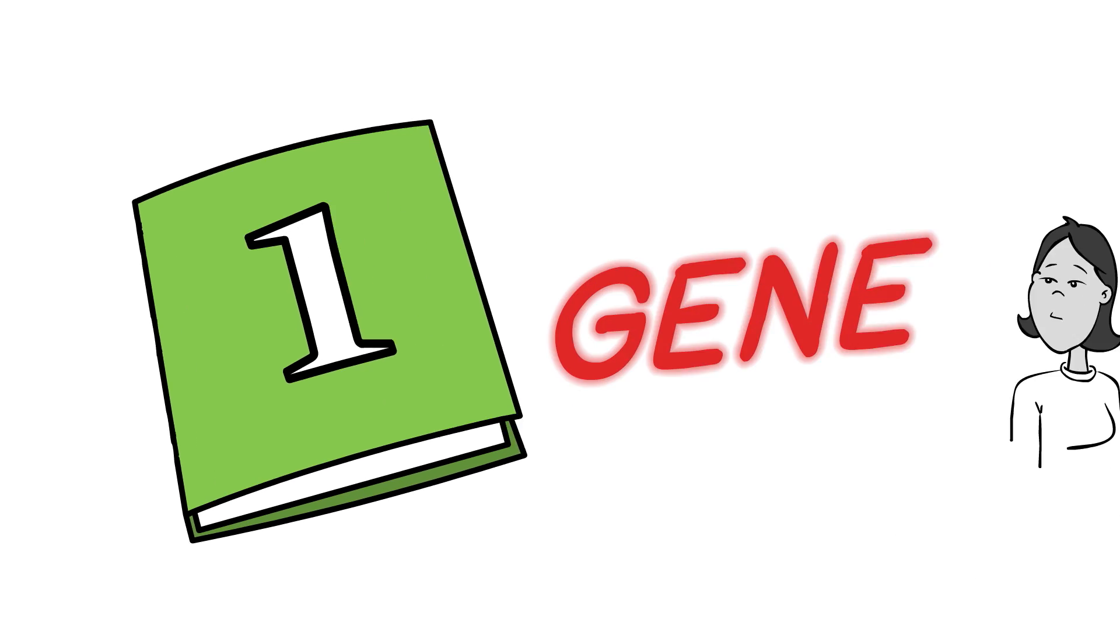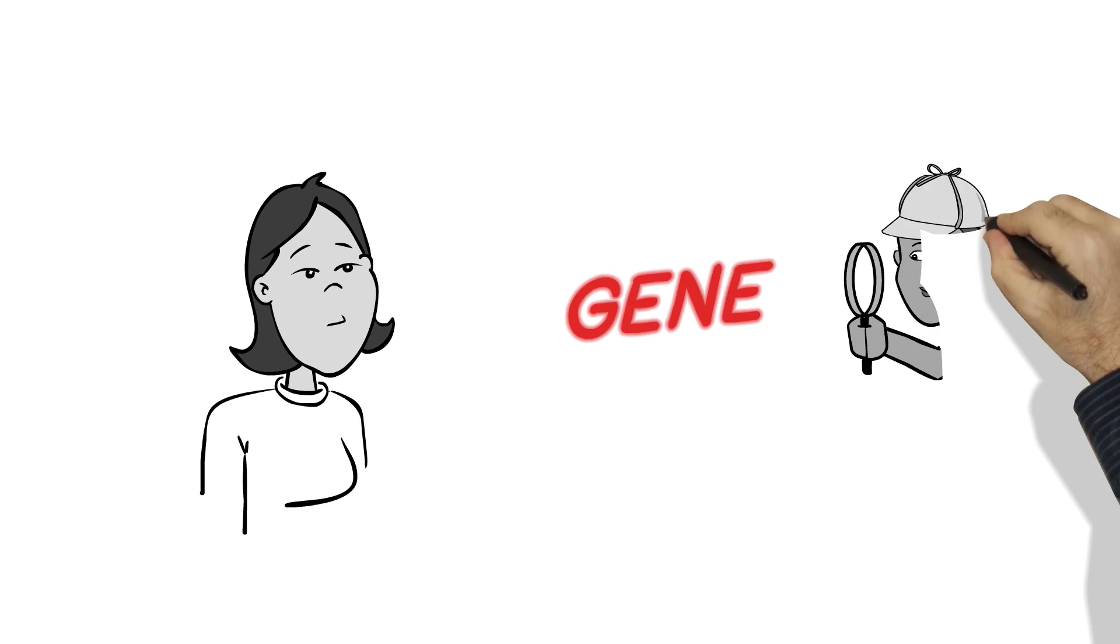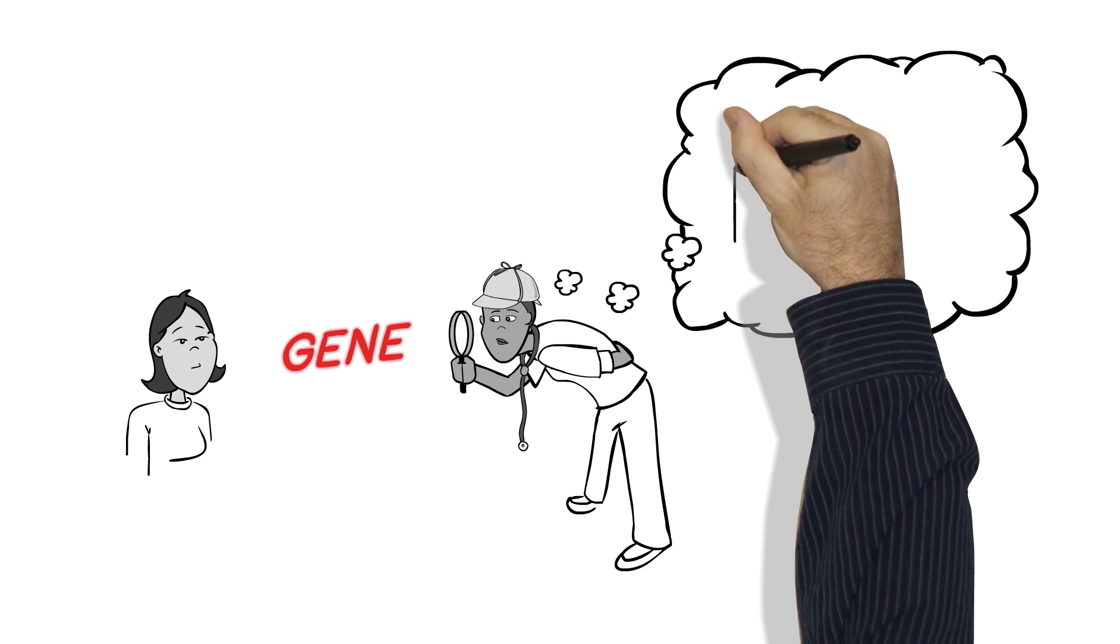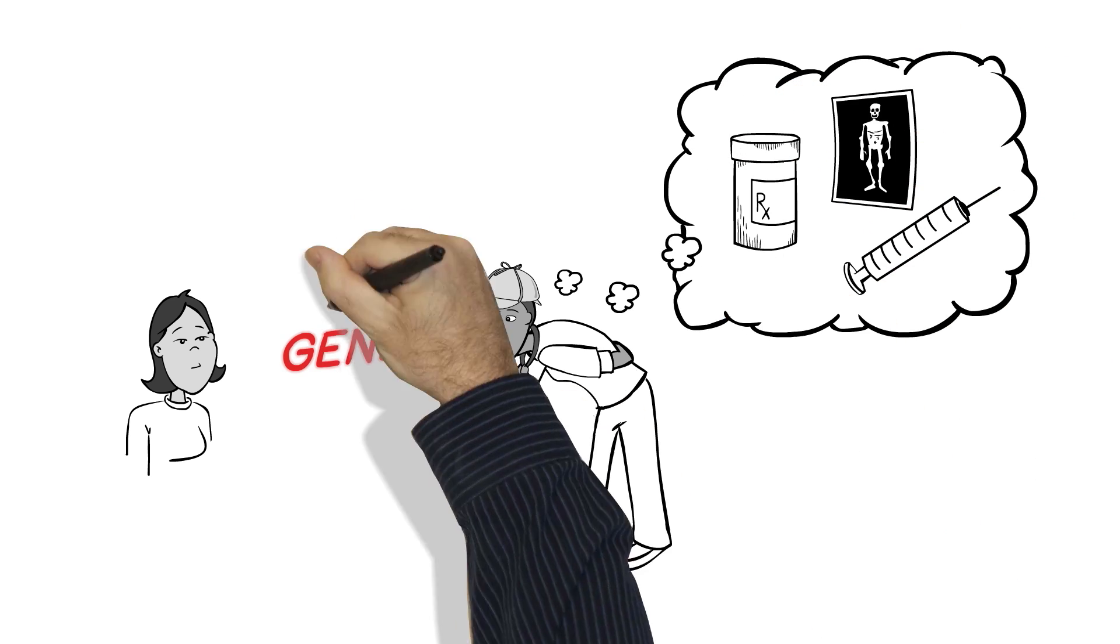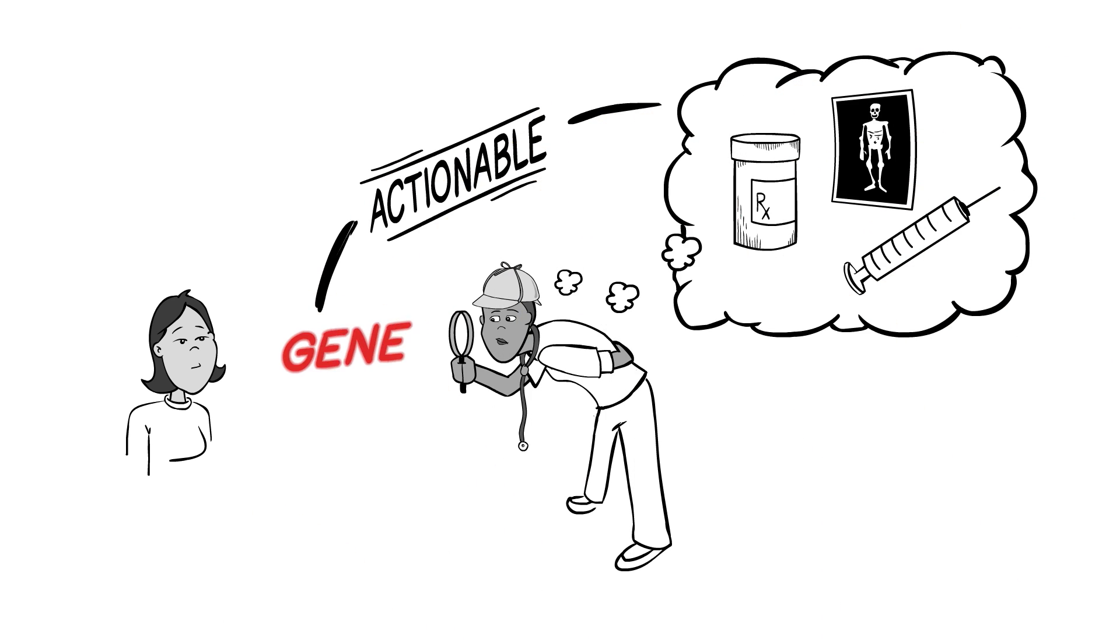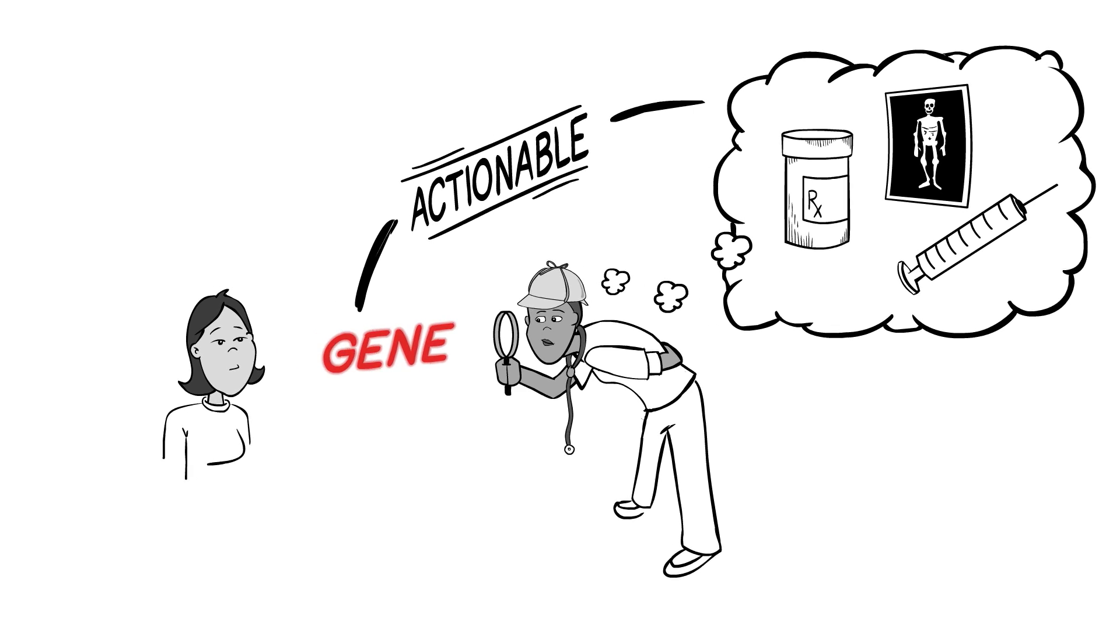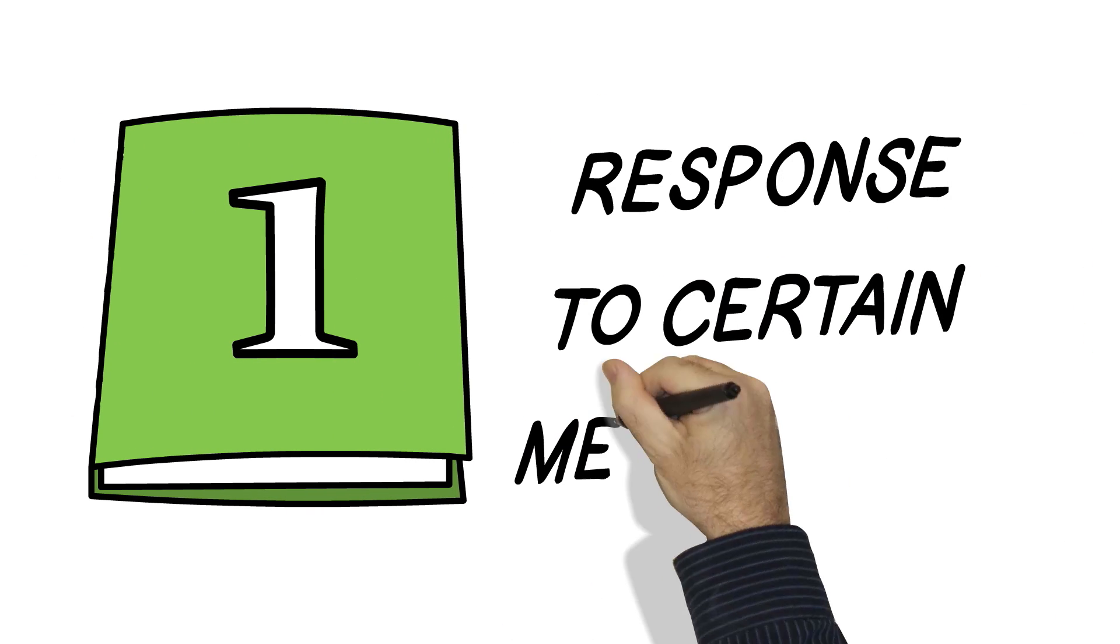Category one is what we might call the most actionable. Here we can discover whether you have a gene that has been clearly shown to raise your risk for certain diseases, and where there are proven therapies or preventative strategies available to help reduce your chance of developing those diseases.